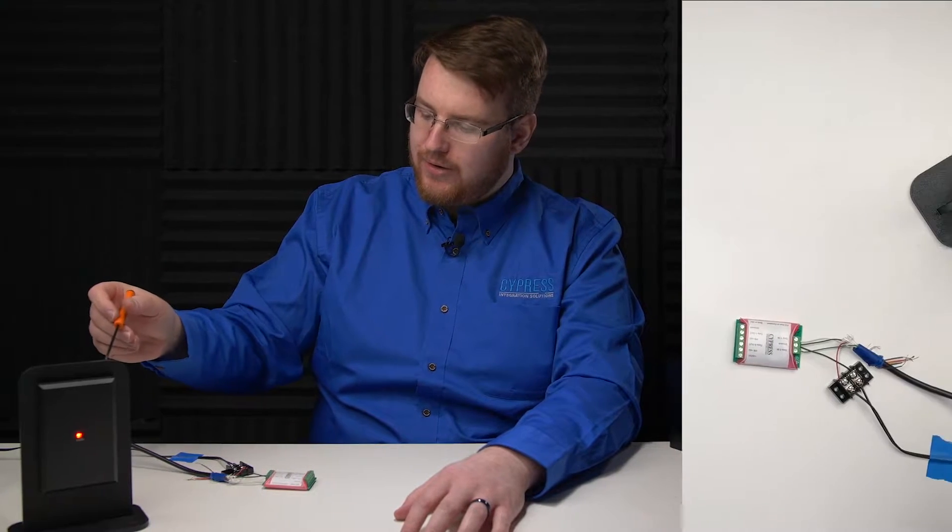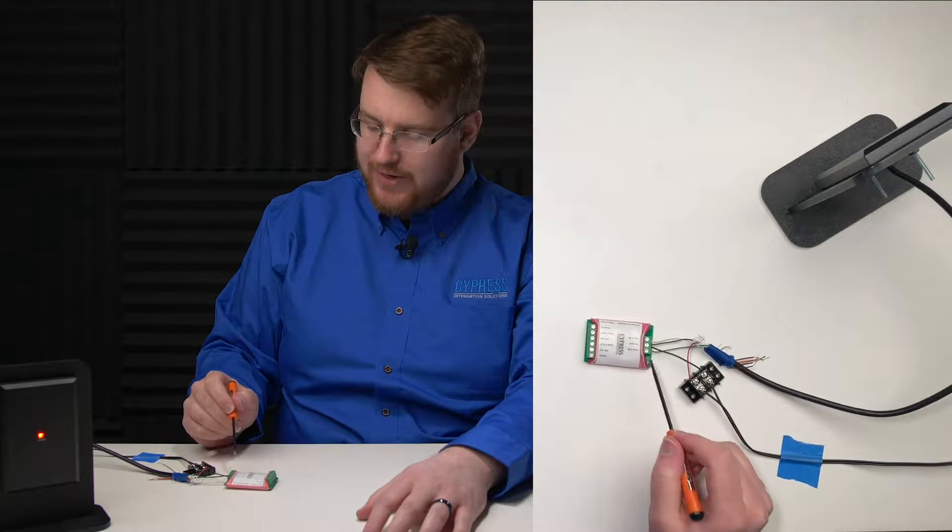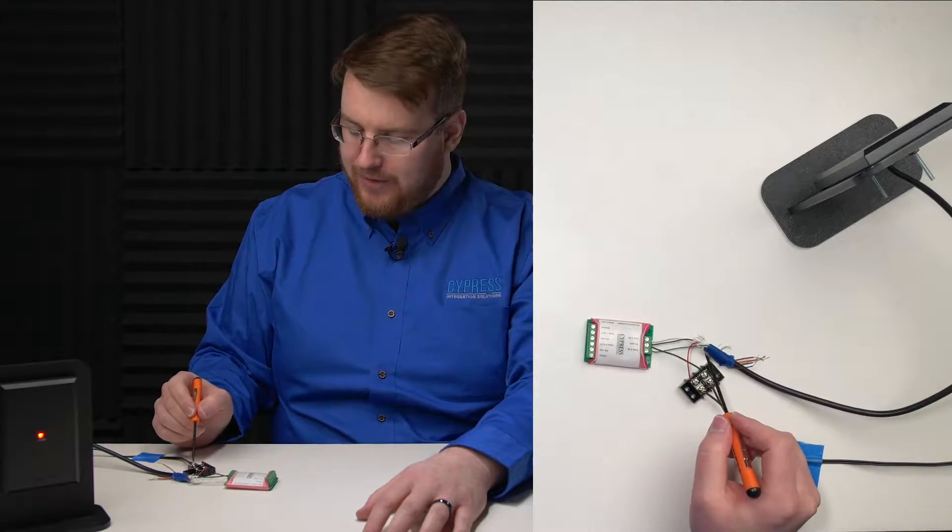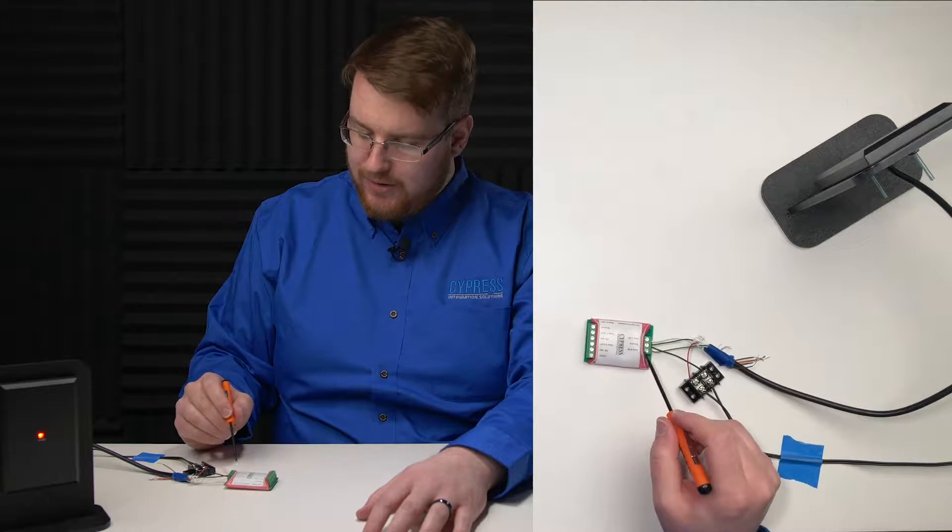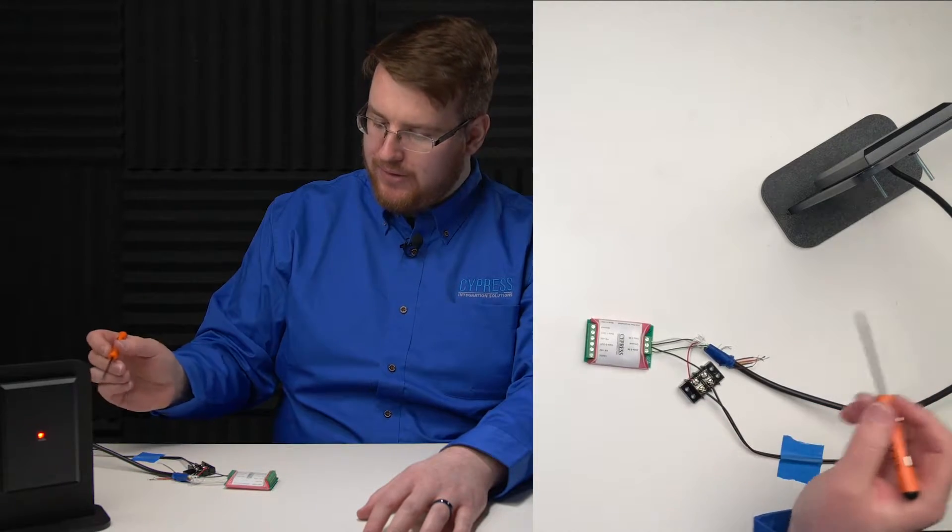Here we have the Wiegand reader connected to the J1 header of the CVX OPTW with data 0, ground, and data 1. We also have our 12 volt power supply powering the reader.